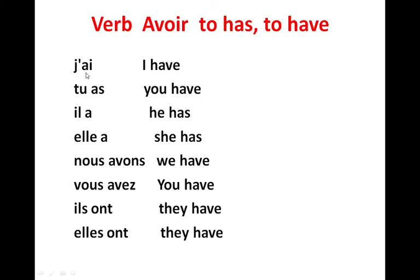Because 'je' is followed by a verb that starts with a vowel, we remove the first 'e' and put an apostrophe, so it becomes 'j'ai' — I have. 'Tu as' — you have. Note it's 'a', not 'à'. 'Il a' — he has. 'Elle a' — she has. Note it's also 'a', not 'à'.